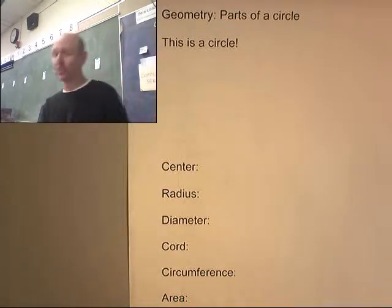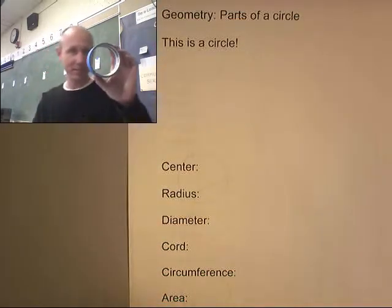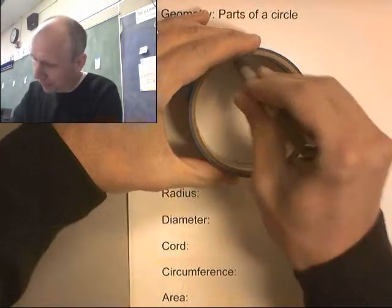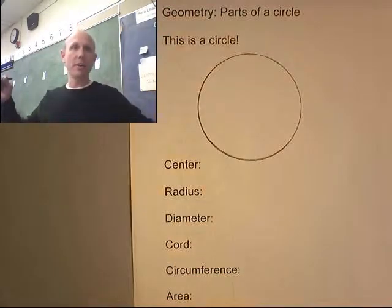So we're looking at parts of a circle. First off, let's hopefully remember what a circle is. Because this is a circle, so I'm going to make a circle right here. There is a circle.